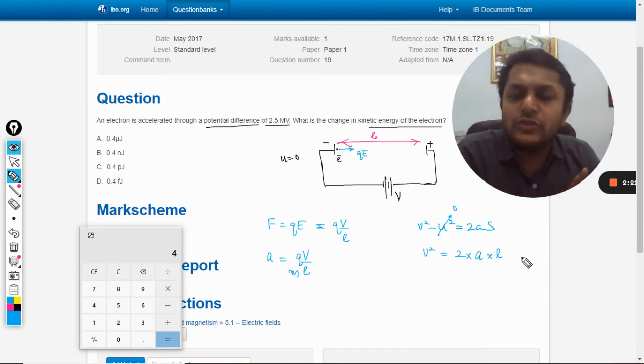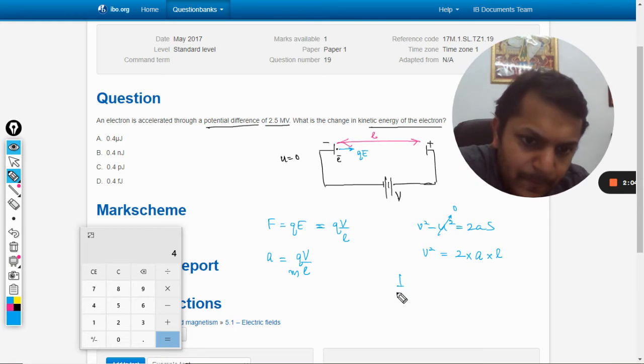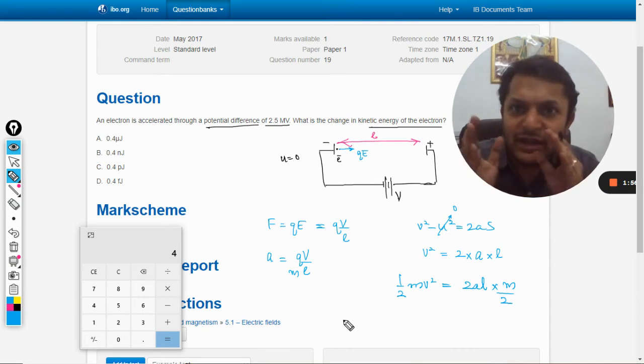From here we can find V, but what I will do is I will multiply this by half into M so that I would be directly getting the kinetic energy. So 2 into A into L into M divided by 2. So I have multiplied by M on both sides and I have divided by 2 on both of the sides. So this becomes the kinetic energy.